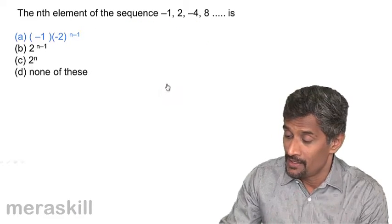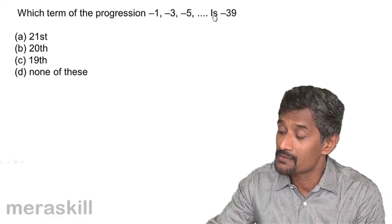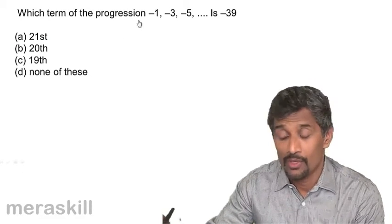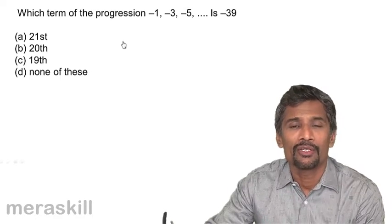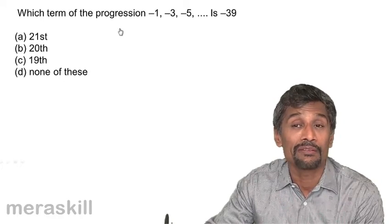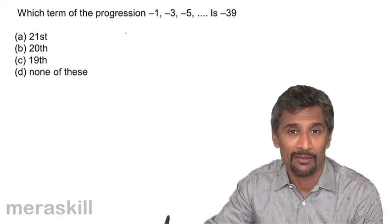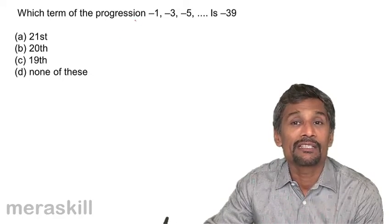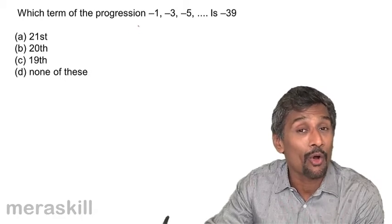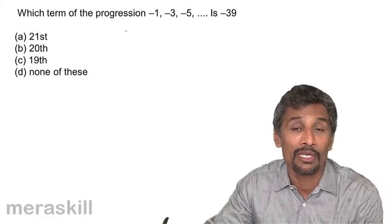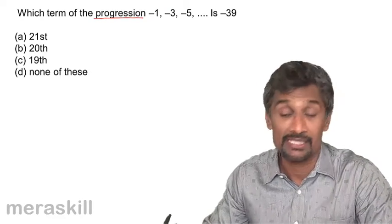Furthermore, which term of the progression -1, -3, -5, ... is -39? At this stage, candidates have a tendency to keep doing things in serial order and forget to verify whether it is an AP or GP. The previous example was deliberately introduced to catch you out — you might assume it is an AP when it could be a GP. Always verify first.